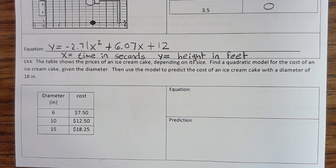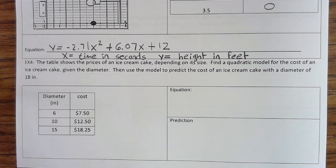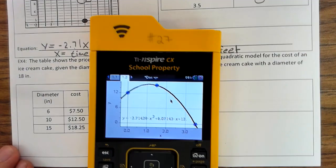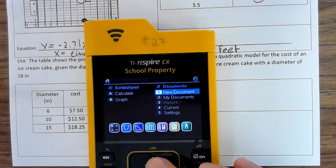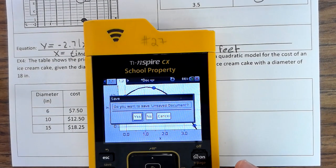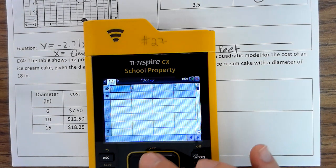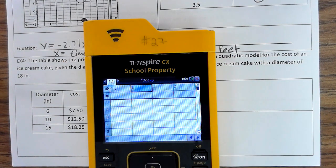All right, so we're going to use our calculator. So, we're going to come here. We're going to go to on, new document, no, adolescent spreadsheets, X, Y.